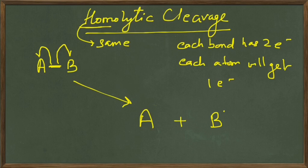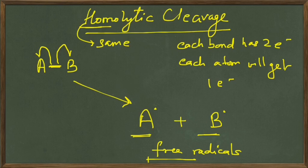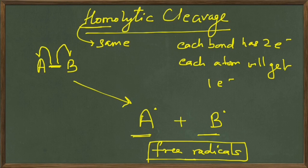We get A and B separately, with each one having one electron. These species are called free radicals. Homolytic cleavage leads to free radicals, and free radicals are species which have an odd number of electrons.